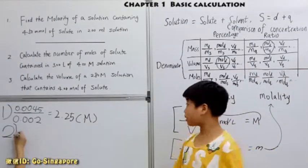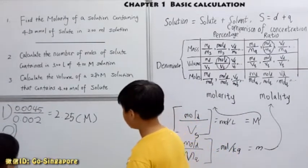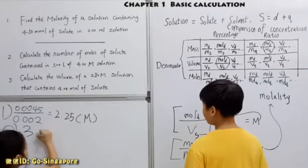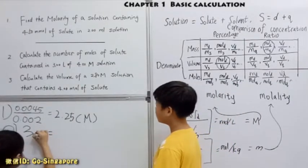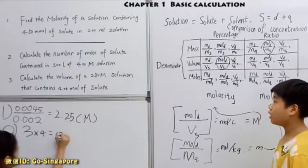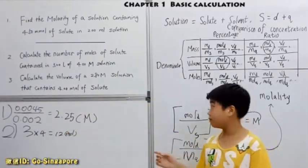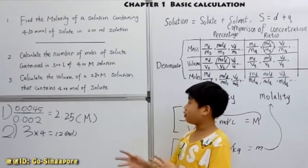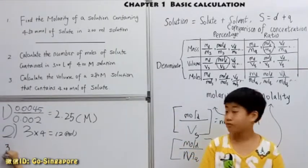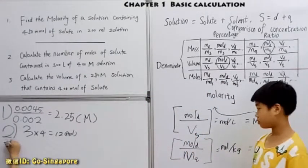So then the second question, calculate the number of moles of solute contained in 3 liters of 4M solution. So this is also molarity. Now, you know why I just 3 times 4. As first, the molarity is actually the number of moles over this volume, right? So just times this volume to the other side. And when you times these two together, it's the number of moles. Correct.